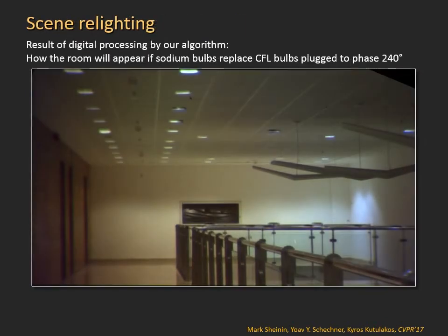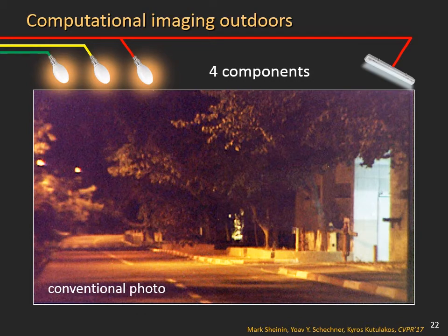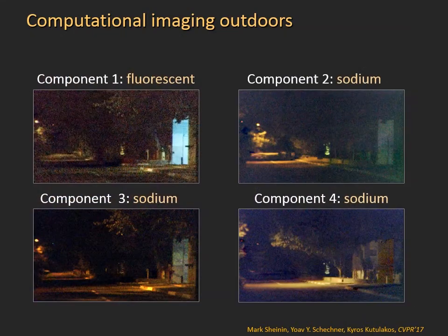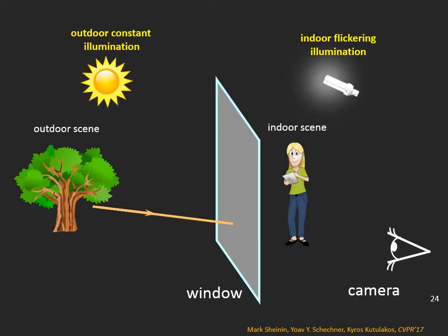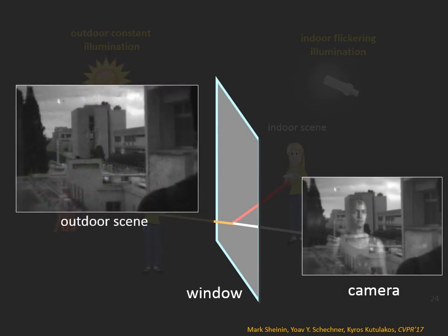Furthermore, we can digitally recompose the scene as if some bulbs are exchanged for others that had not been present when the photos were taken. For example, here we show how the room would appear if some compact fluorescent bulbs are replaced by sodium bulbs. This scene has four components, and here we reveal the scene's illumination components. Here we observe a scene through a window — the window causes a reflection, and our system separated the outdoor scene from the indoor reflection.